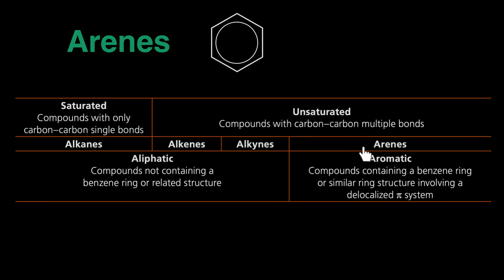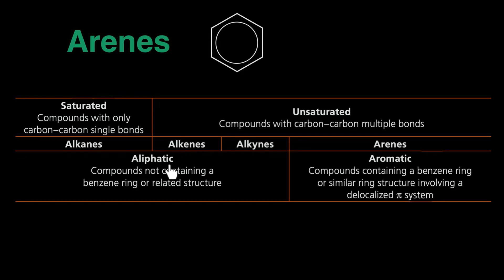Arenes are different from other hydrocarbons because they are aromatic. The name comes from 'aroma' — they tend to have a smell — but more importantly they have a benzene ring or a delocalized pi system. Any compound with that delocalized pi system is called an arene. Alkanes and alkenes seen in O levels and AS level are called aliphatic compounds — those that do not contain a benzene ring or related structure.